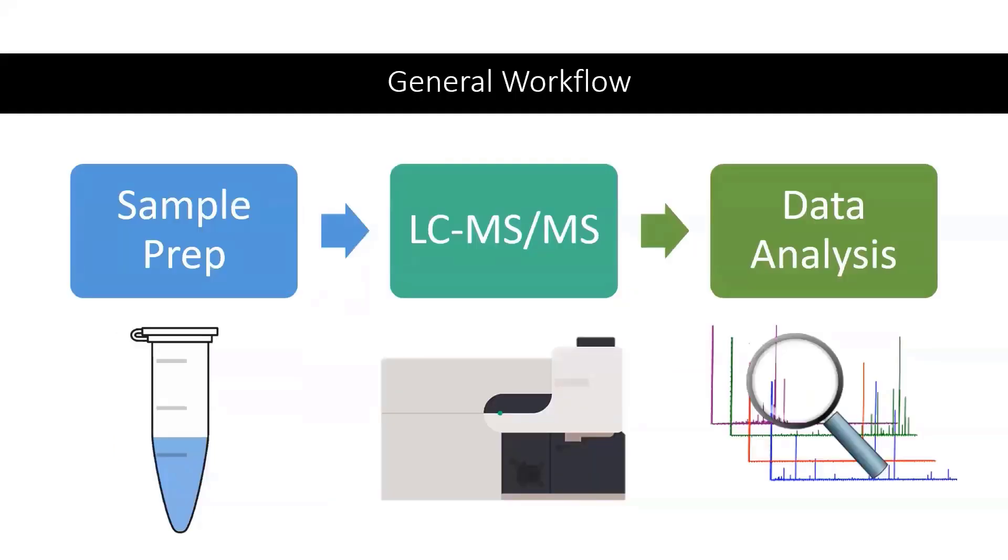The general workflow can be broken up into three main steps. It begins with sample preparation. Prepared samples are then placed in the mass spectrometer, and once the experiment is complete, the results are analyzed. We will briefly be reviewing each of these steps, beginning with sample preparation.